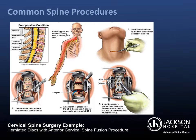Common spine procedures include: a laminectomy, which is the removal of the lamina, done to increase space in the spinal canal and relieve pressure on the spinal cord and nerve roots; a discectomy, the partial or full removal of the disc located between two vertebrae; and a spinal fusion, the fusing of two or more vertebrae, which may be done at the same time as a discectomy to help stabilize the spine. One example is an anterior cervical spine discectomy and fusion. If you have questions about your procedure, please ask your surgeon during your pre-op appointment.